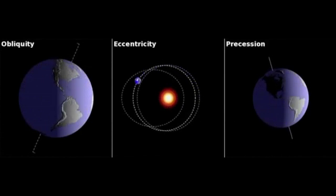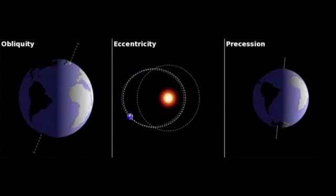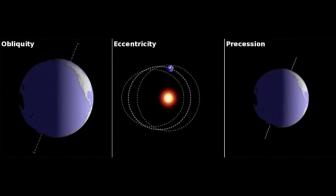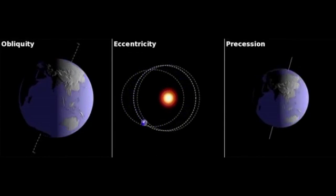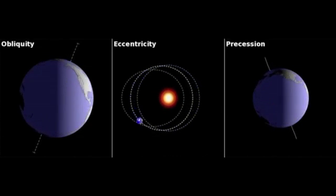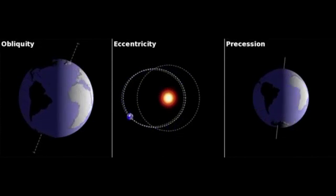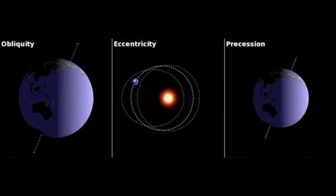All three of these cycles must come together to create a glacial period. However, without one, an ice age is unable to occur. At the moment, the precession and eccentricity are favorable for a glacial period, but the axial tilt is tilted at 23.4 degrees, keeping us in an interglacial period.